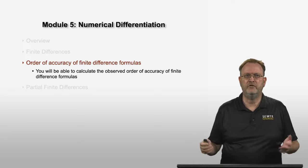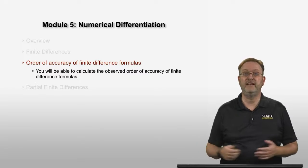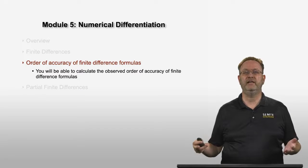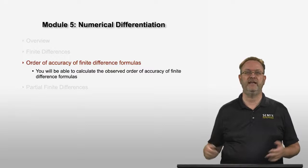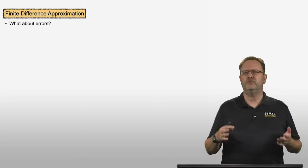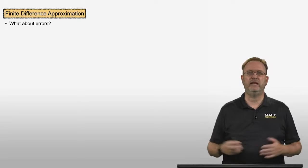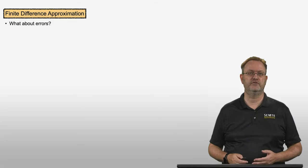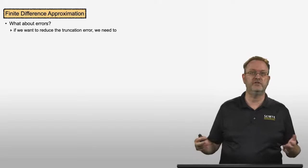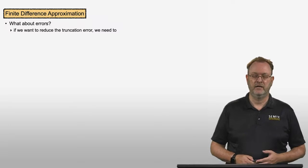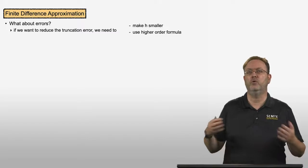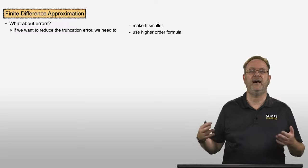Welcome to this video where we will talk about the order of accuracy of our finite difference formula, so that by the end of this video you will be able to calculate the so-called observed order of accuracy of a finite difference formula. Up till now we have not really talked in detail about the error that we make when we use finite difference approximations to the derivative. What we know is that if we want to reduce the truncation error we need to either make the spacing between adjacent points h smaller, or we would use a higher order formula.